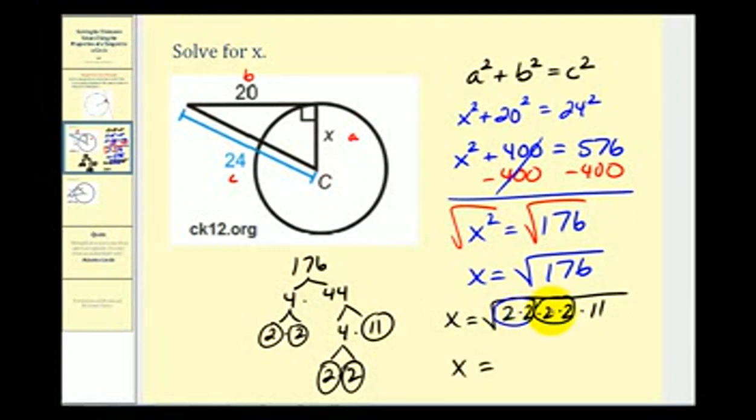So this pair gives us a 2, this pair gives us a 2. So we have a 4 outside the square root. So 4 times the square root of 11.